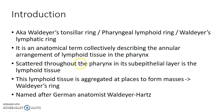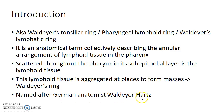Scattered throughout the pharynx in its sub-epithelial layer is the lymphoid tissue. This lymphoid tissue is aggregated at places to form masses, which are collectively called Waldeyer's ring. It is named after German anatomist Waldeyer-Hartz.